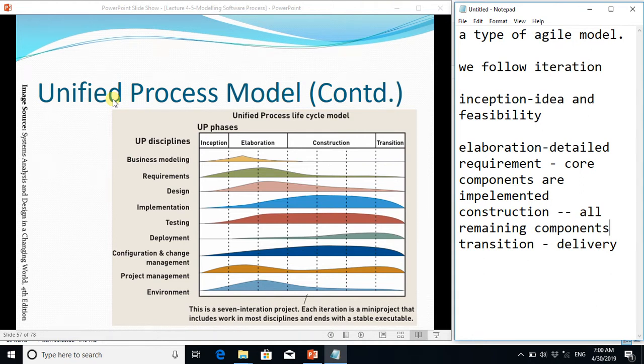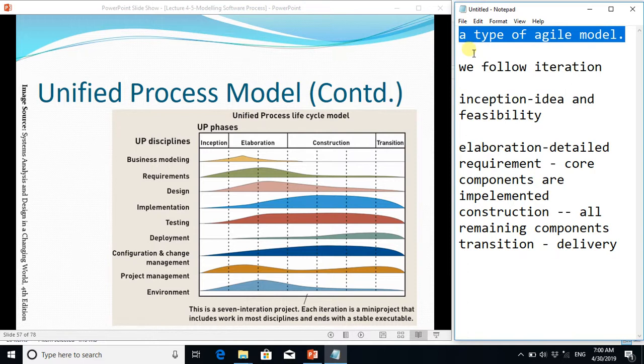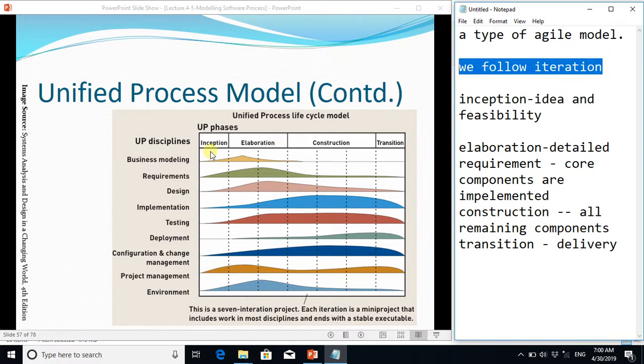The Unified Process Model is also a type of agile model, a rapid development model. Here our focus is rapid development, a speedy development process. In this process we follow different iterations. For all phases we have four iterations.